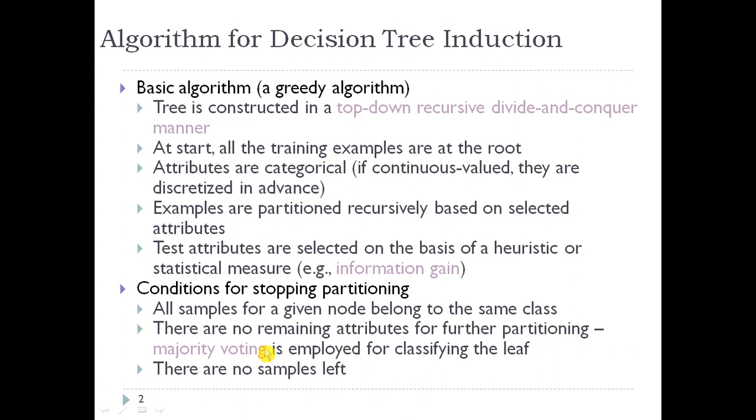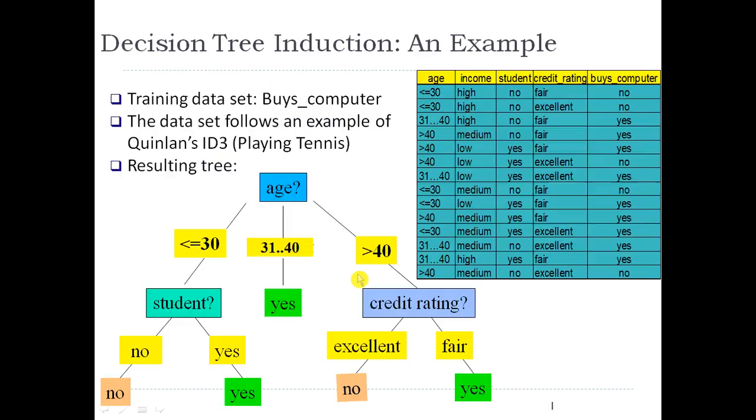These three are conditions for stopping partitioning. Now let's see one example. Here the table is given - it's data for Buys_computer. We take this data and apply some testing to find out the decision tree. The data set follows an example of ID3 algorithm. The basic decision tree algorithm is ID3 algorithm.